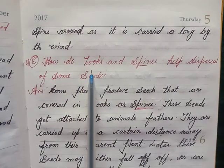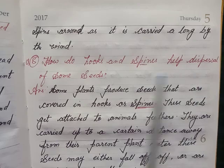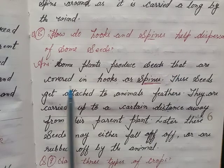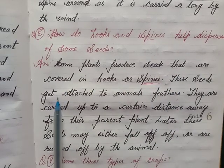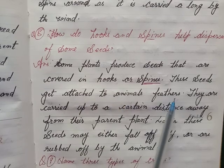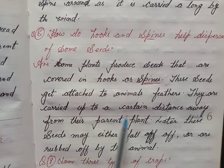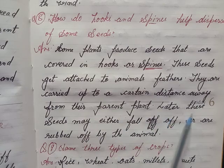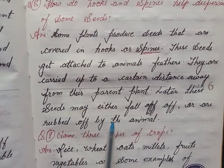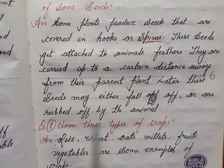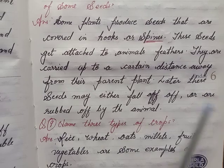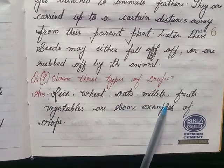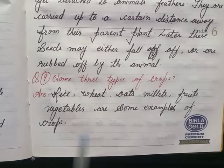Question 8: How do hooks and spines help dispersal of some seeds? Answer: Some plants produce seeds that are covered in hooks or spines. These seeds get attached to animals' feathers and are carried up to a certain distance away from their parent plants. Later, these seeds may either fall off or are rubbed off by the animal. Question 9: Name three types of crops. Answer: Rice, wheat, oats, millet, fruits, and vegetables are some examples of crops.